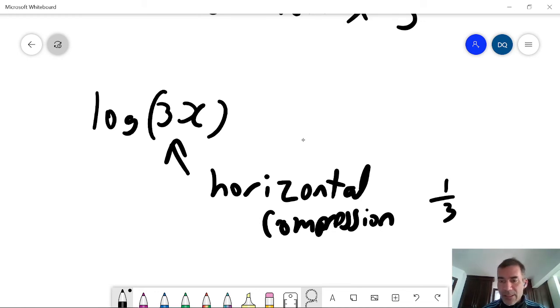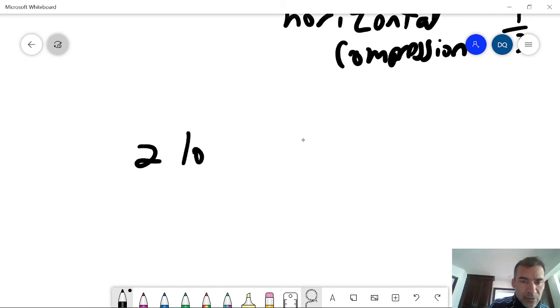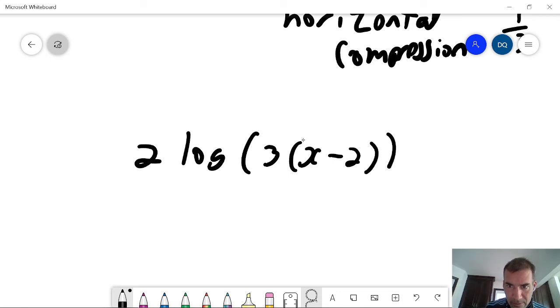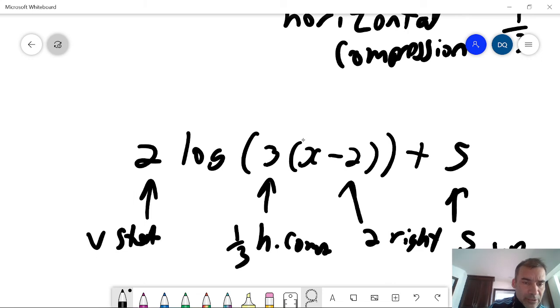So whatever number here is a horizontal compression. We can put this all together. So let's say I've got 2 log 3x minus 2 plus 5. This will be shifted 5 up. This will be a 1 third horizontal compression. This will be shifted 2 units right. And it's got a vertical stretch by a factor of 2.